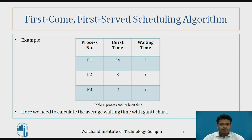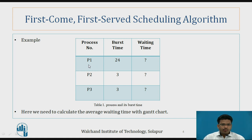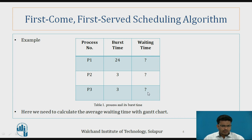Here we will have one table with three fields: the process number, burst time, and waiting time. The processes are P1, P2, and P3, with burst times of 24, 3, and 3 respectively. We need to calculate the waiting time of each of these processes.